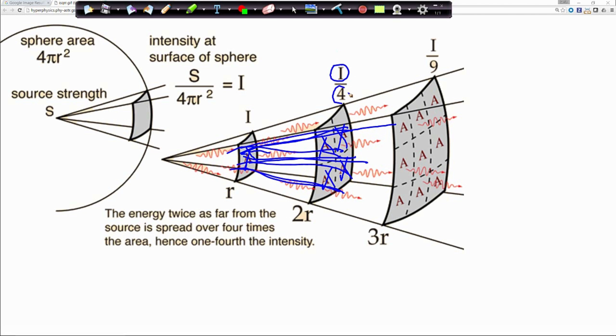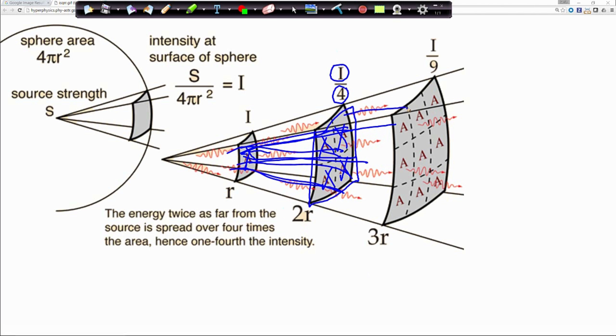We take that intensity and divide it by the square of the distance—you see where this inverse square law comes from? Look, we're gonna go out three units. Now we have nine squares. Same amount of energy, but it's just not as intense. They're more spread out. So there you go, there's the inverse square law.